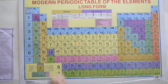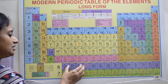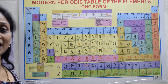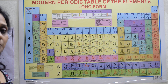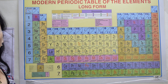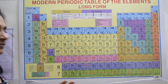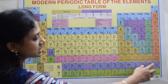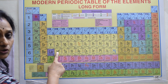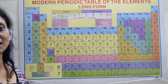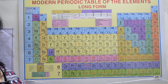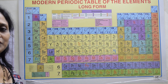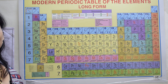The third limitation is the placement of lanthanides and actinides. Because including them inline would make the table very long, they were placed separately below the periodic table. Ideally, after element 57, elements 58 through 71 should follow inline, then continue with 72 onwards, but this was not clearly accommodated.